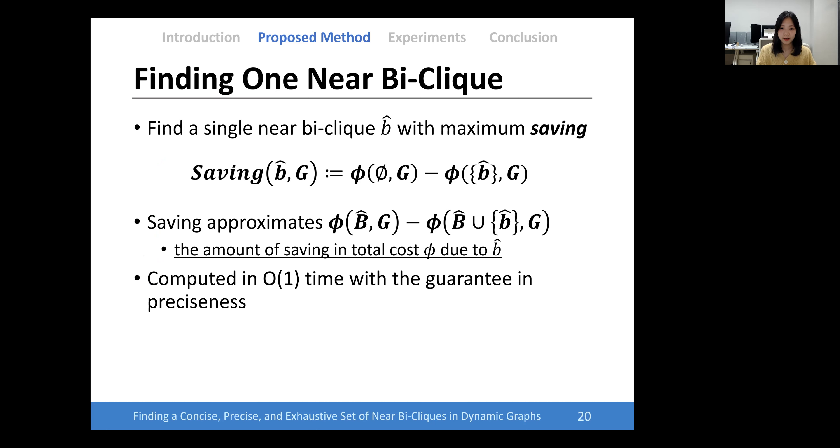First, let's define saving cost. Cut and Peel finds a single near bi-clique with maximum saving cost. It approximates the amount of saving in the total cost due to the near bi-clique. It is computed in O(1) time with the guarantee in precision.